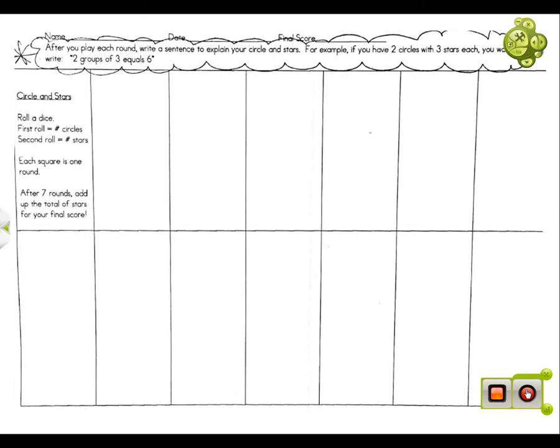Today we're going to play a game of circles and stars. Your first roll is going to be for how many circles you're going to put in the first box. You rolled a one, so that's how many circles you're going to have.